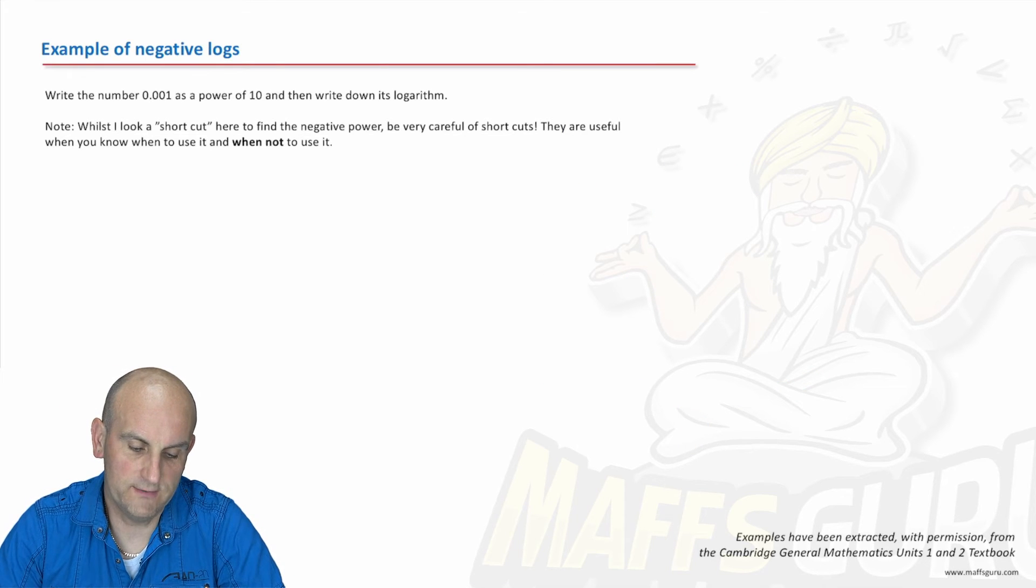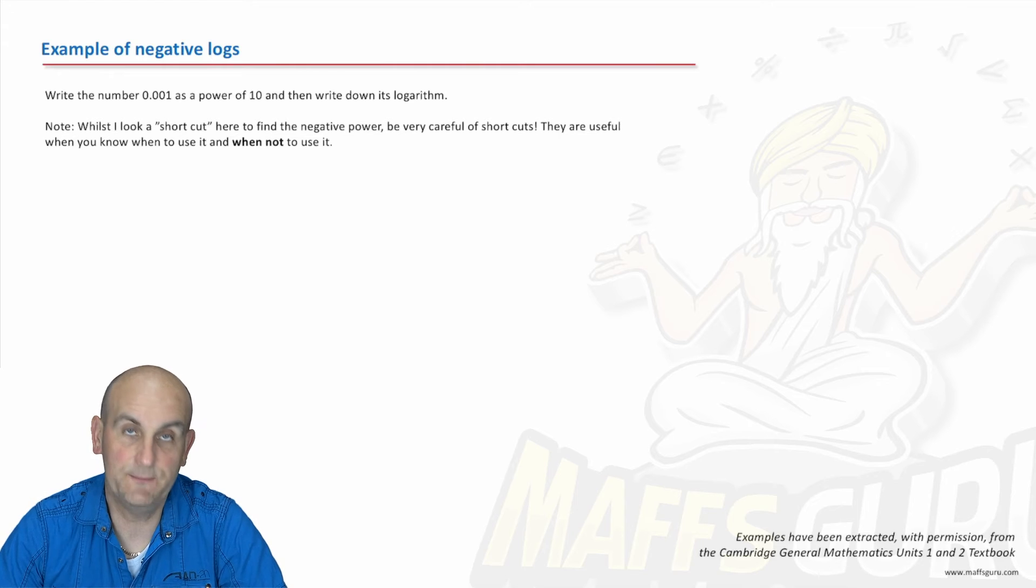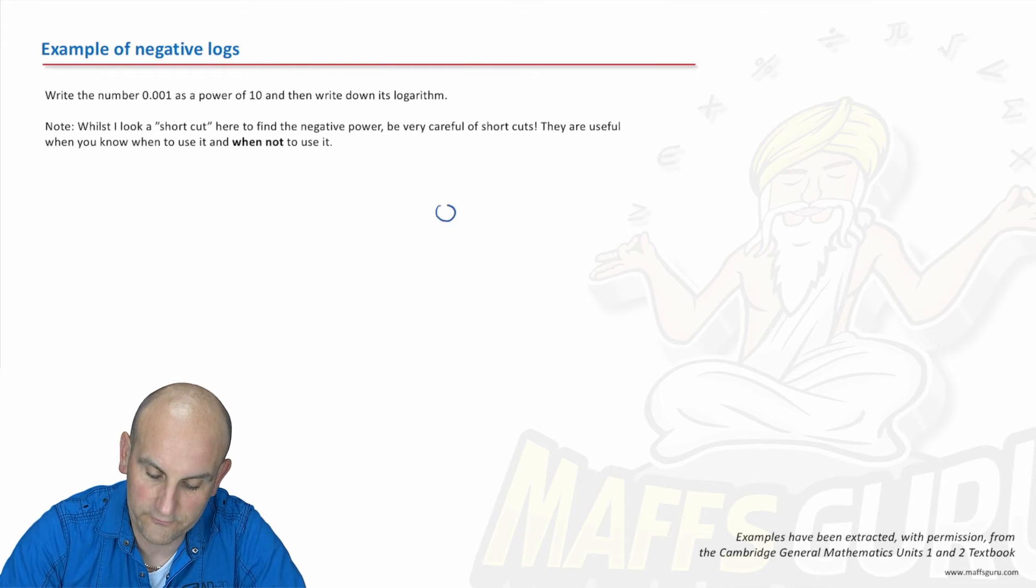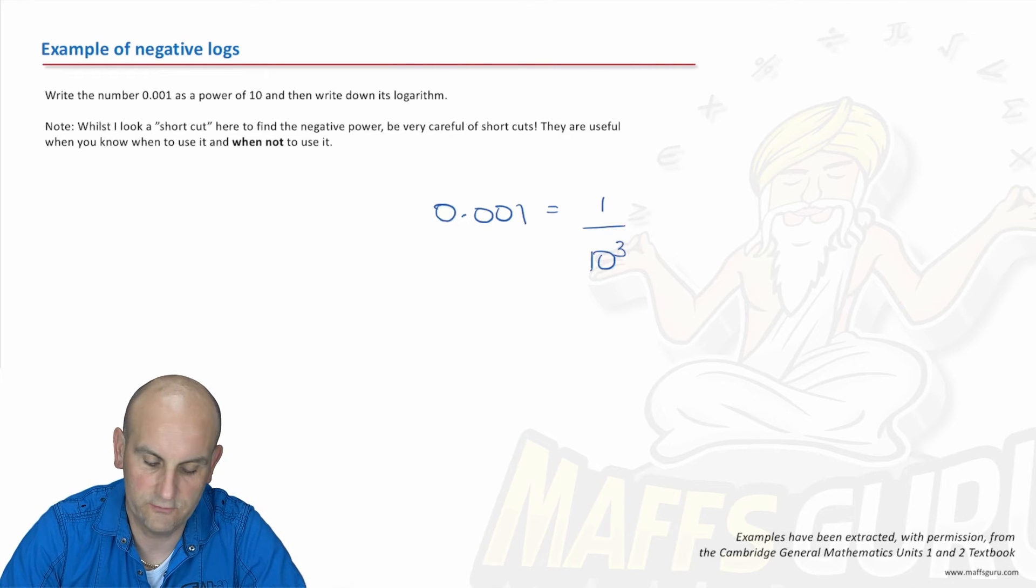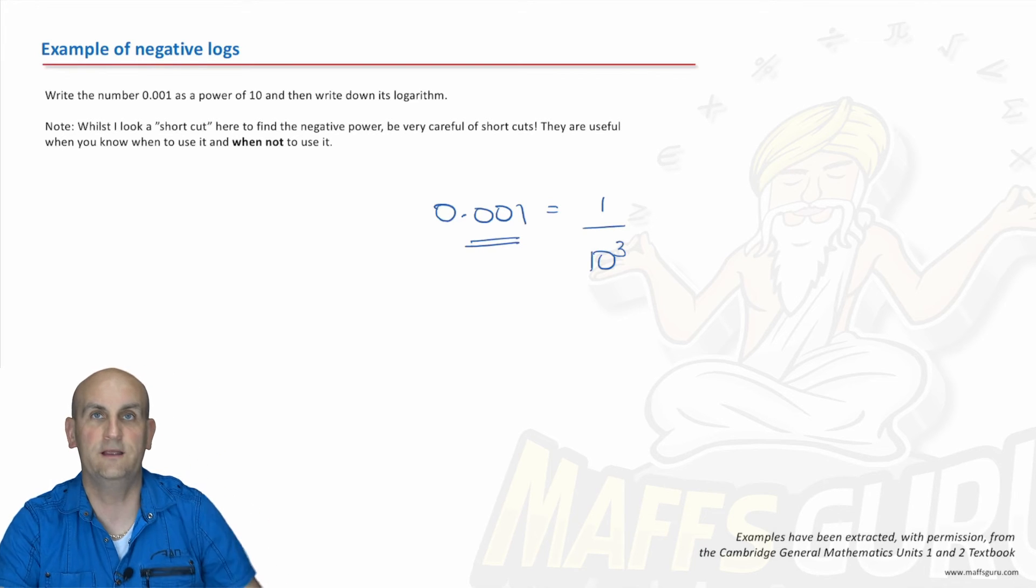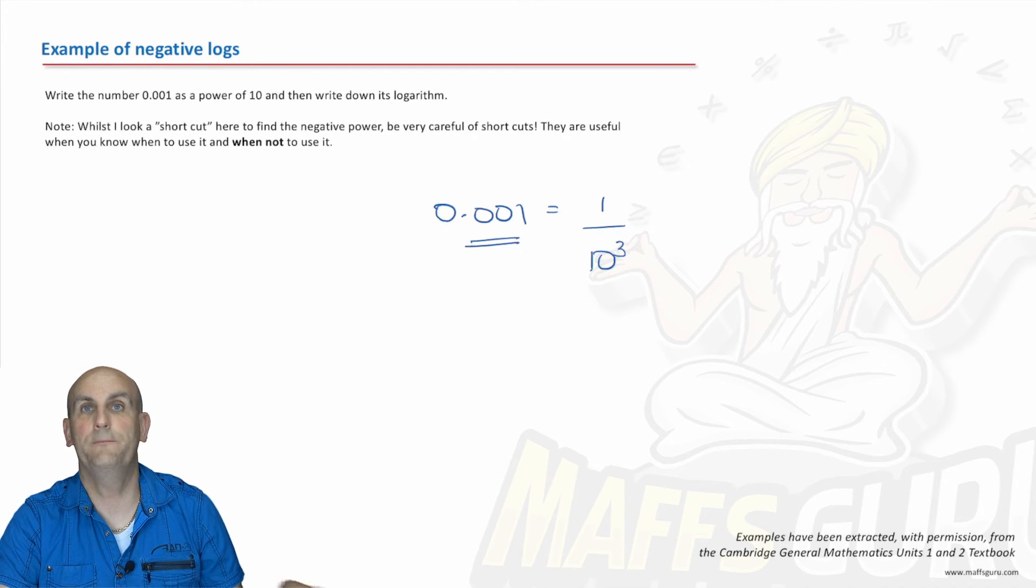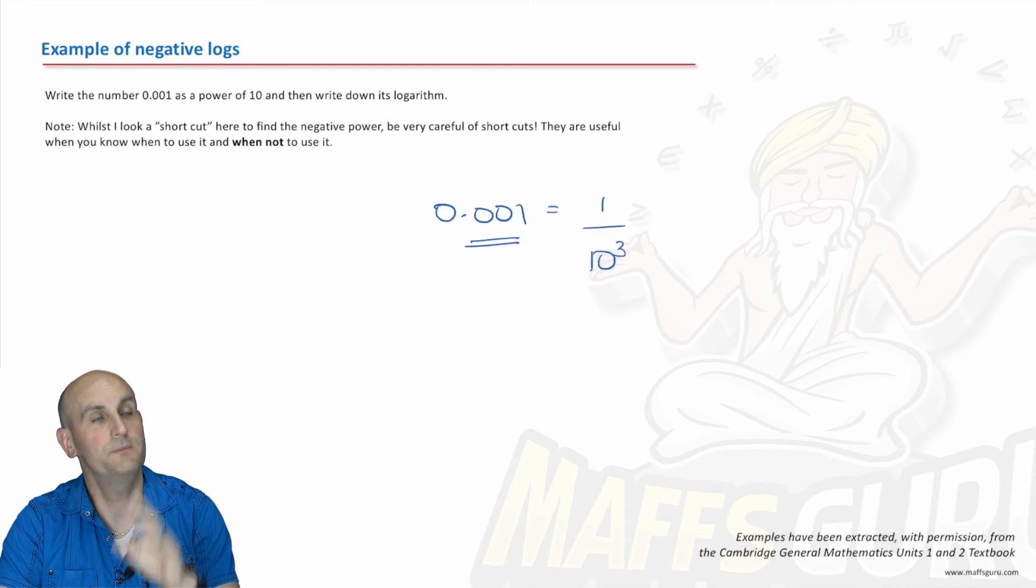So let's write the number of 0.001 as a power of 10. So we've got 0.001. I know that that's 1 divided by 10 to the floaty 3. Now I'm going to show you a shortcut. There are three numbers after the decimal place there, and so that means that it's 10 to the floaty 3. But as I say there, that is a shortcut.